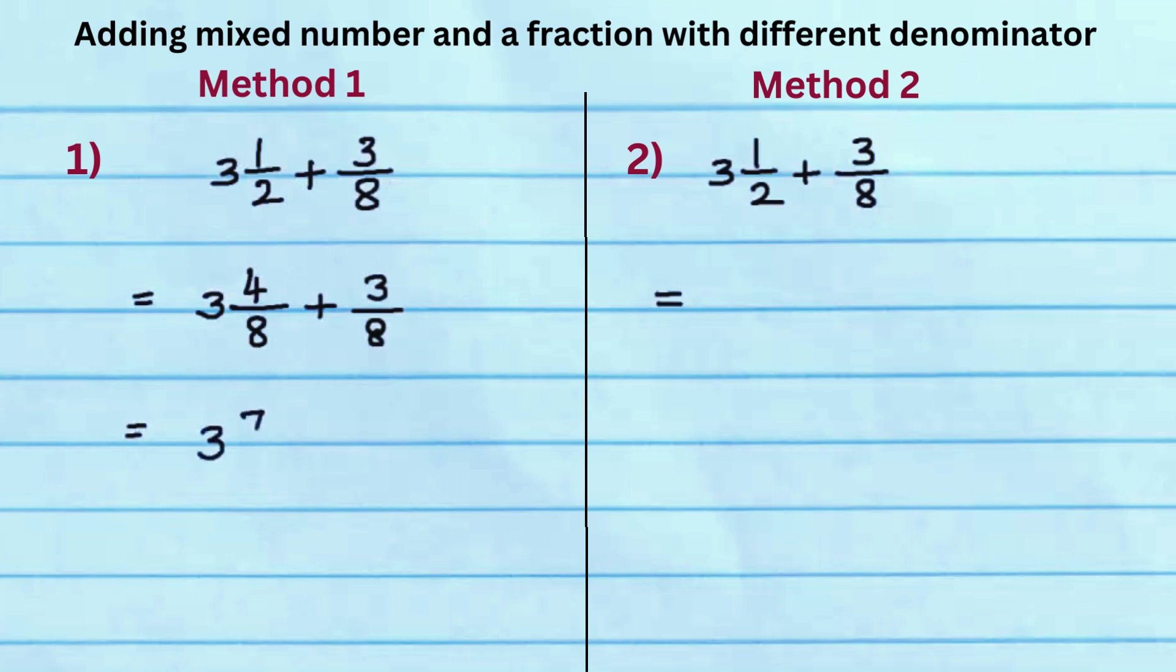Write the whole number 3, add the numerators 4 and 3, and write the common denominator 8 to get the answer 3 and 7 eighths.